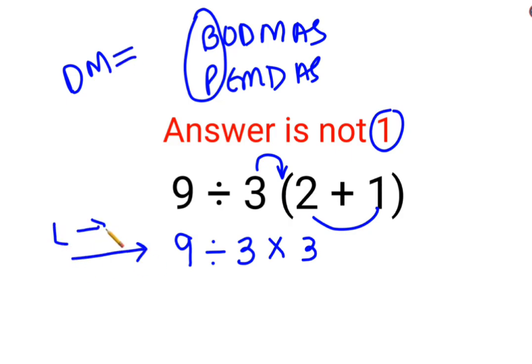So in sums like these, you have to go from left to right. Whatever operation happens first on your left hand side has to be done first. So we have 9 divided by 3, which is 3, multiplied by 3.